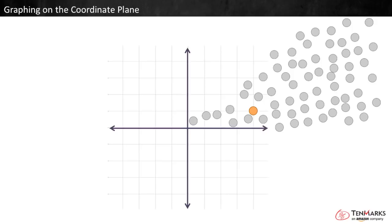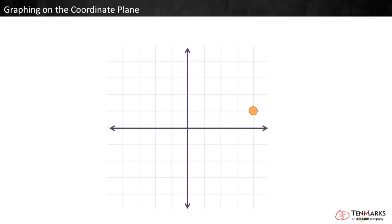I can say that the point is one space above the horizontal line, and four spaces to the right of the vertical line. It's the only point located there. We found a way to describe the point's location very precisely.